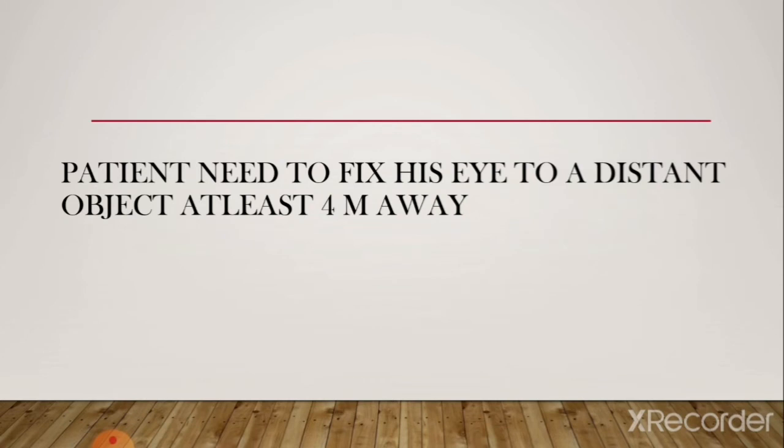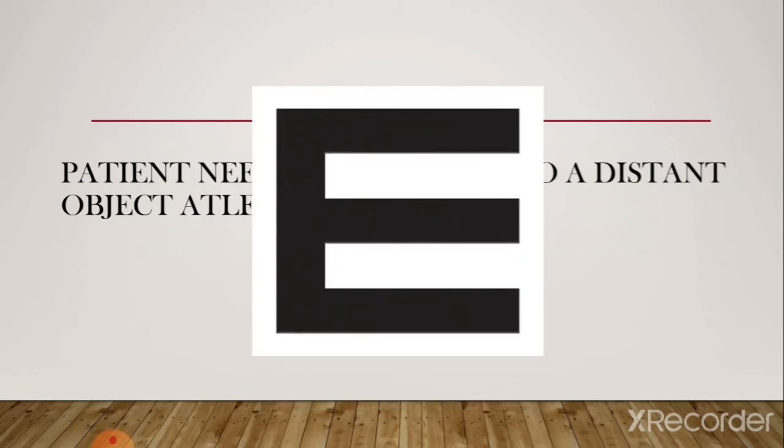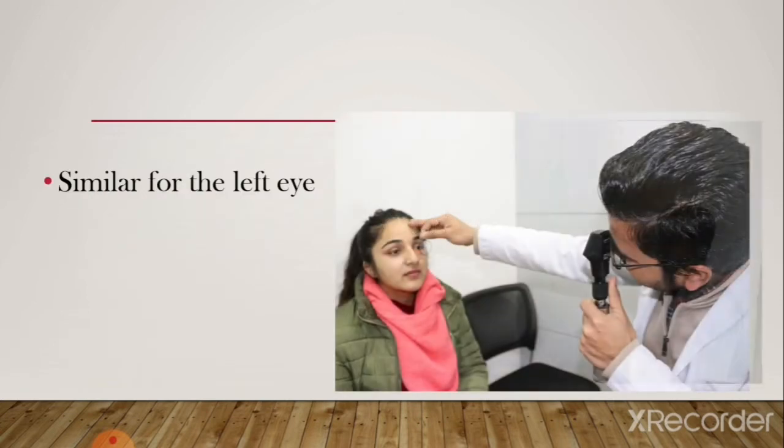The patient needs to fix their eyes on a distant object, at least four to six meters away, and should be instructed to look at the largest letter available on the chart. This is done because, while performing static retinoscopy, the patient needs to fixate on a distant object to relax accommodation. If accommodation is not relaxed, it adds power and causes error. You can use a tumbling E letter at 24/00 or 28/00, whatever the largest letter in your visual acuity chart.